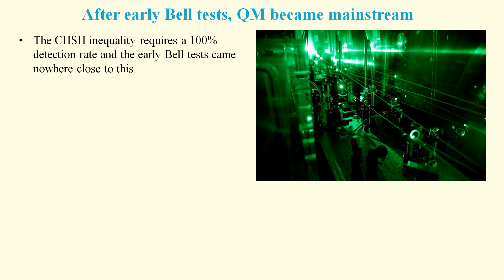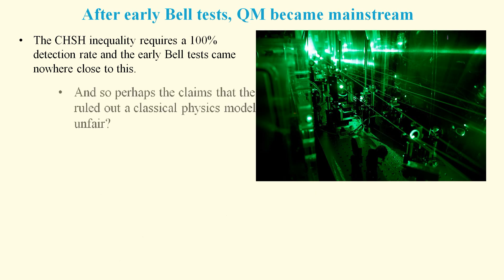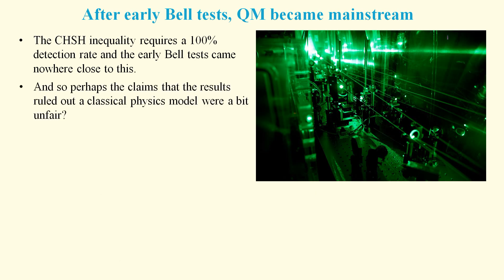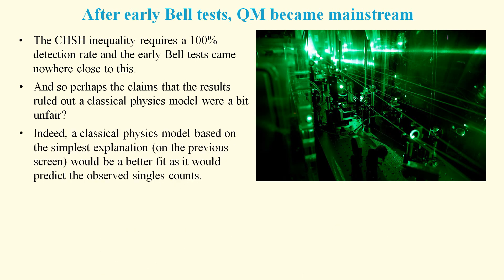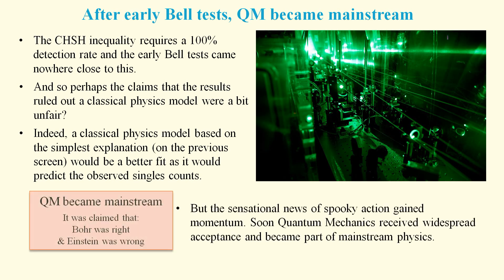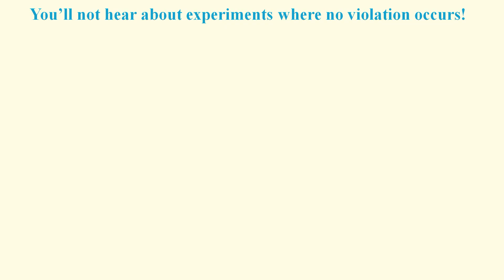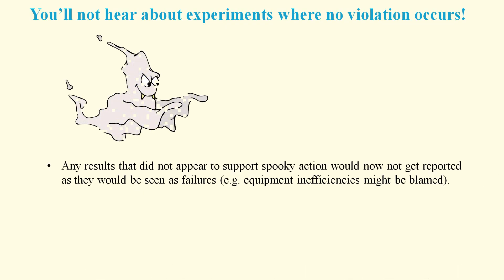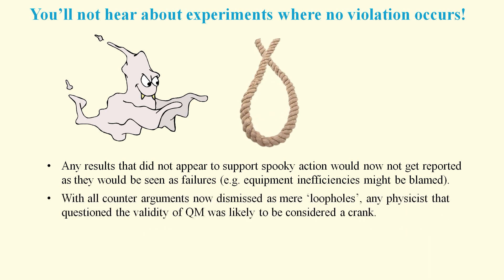Arguably, the CHSH inequality was inadequate for experiments like this, where a lot of photons are not detected, and it could be claimed that it was unfair to assume fair sampling. But the sensational news of spooky action was very appealing, and so entanglement soon gained general acceptance. This meant that only experimental results that appeared to confirm spooky action would get reported, possibly giving a completely false impression that quantum mechanics was highly successful. All counter-arguments were now dismissed as mere loopholes.